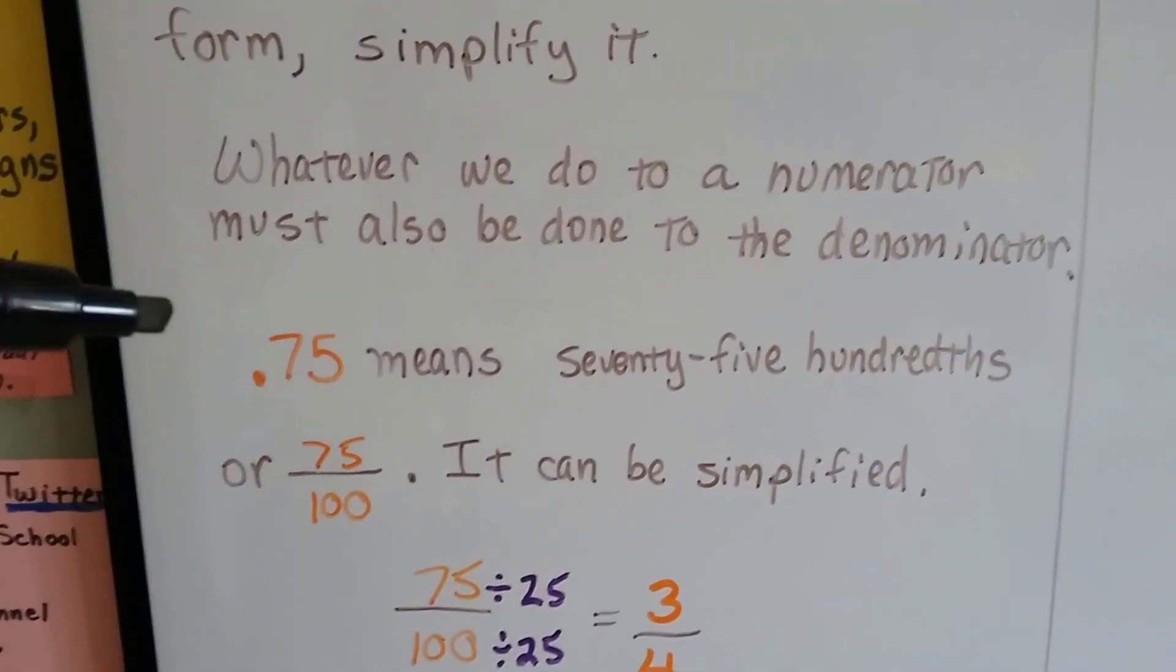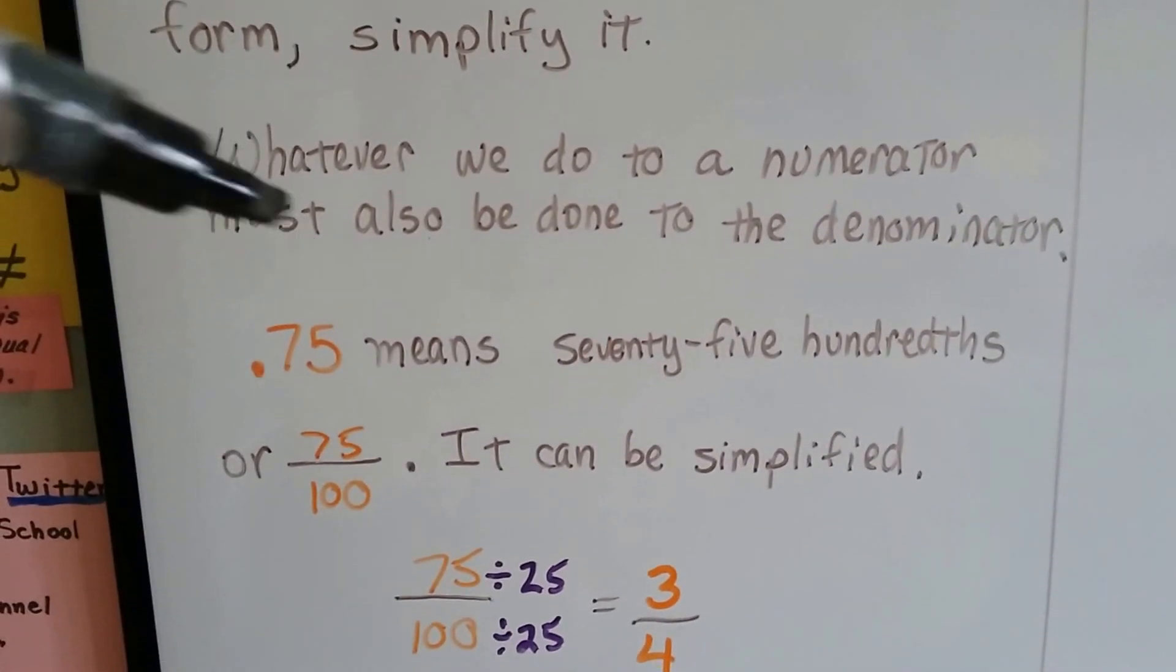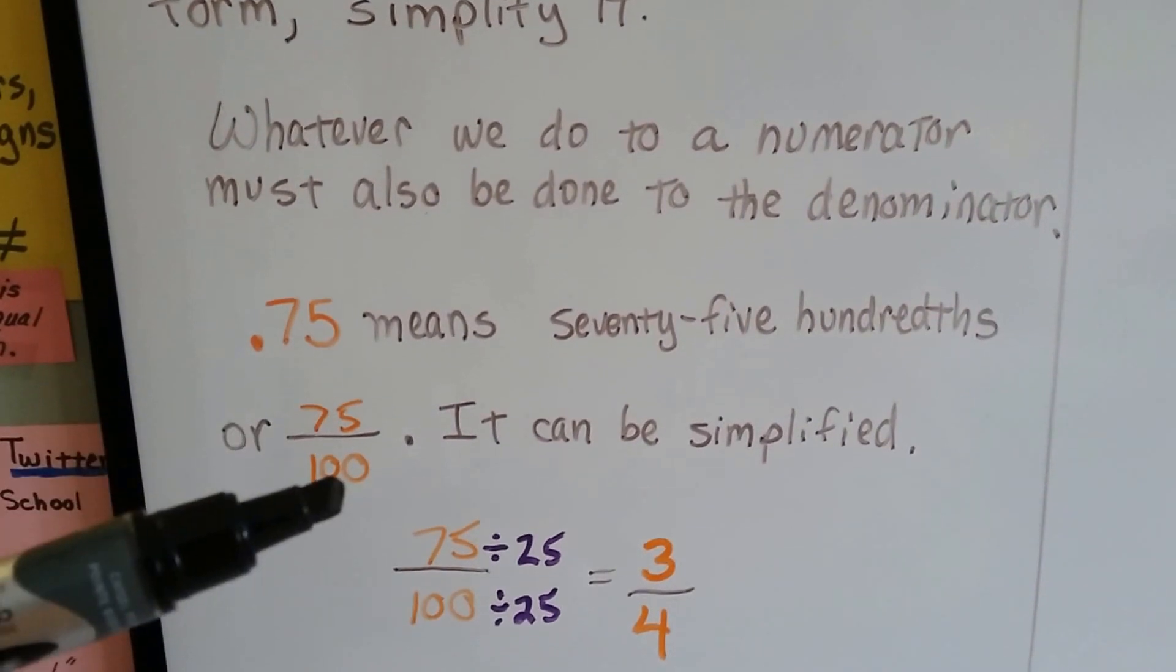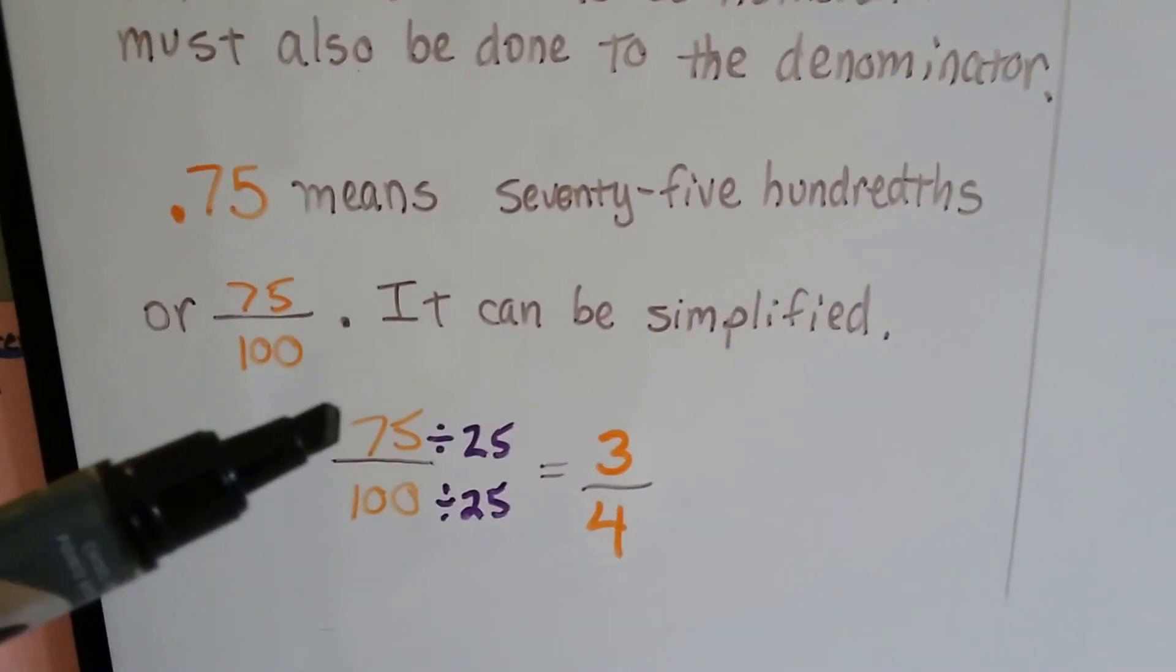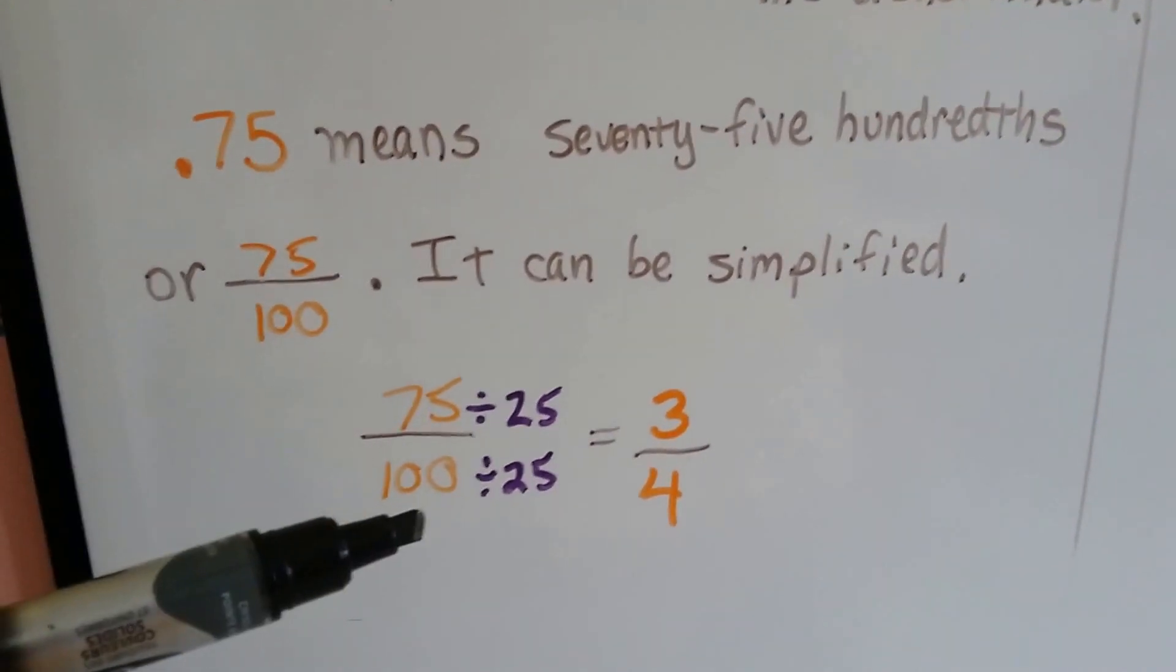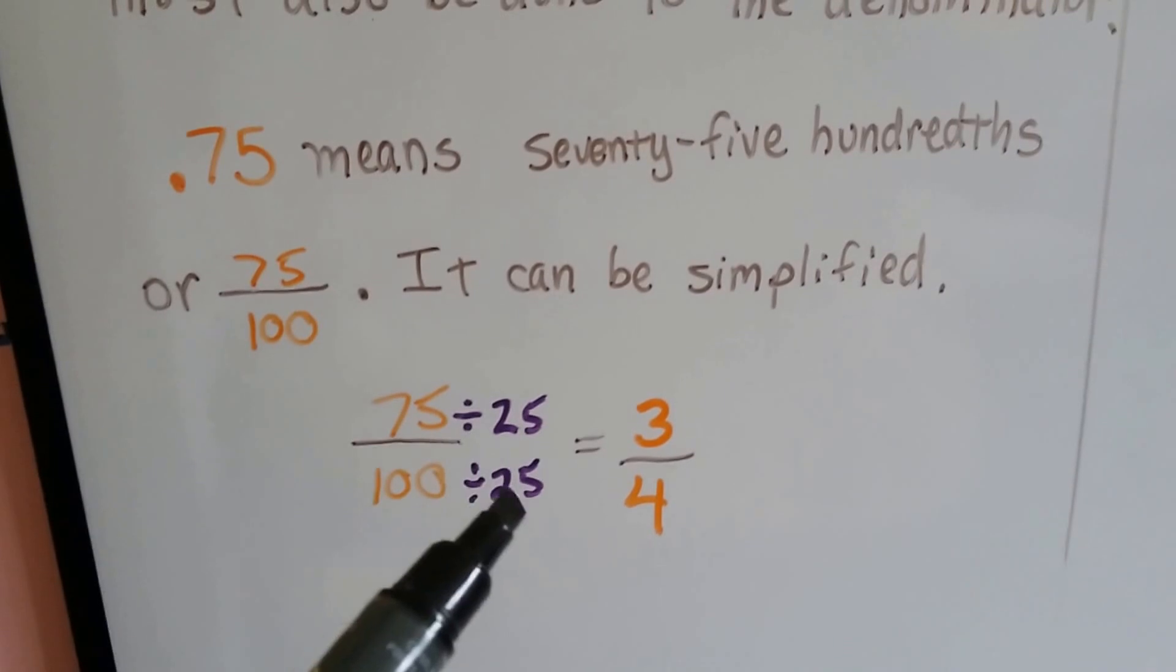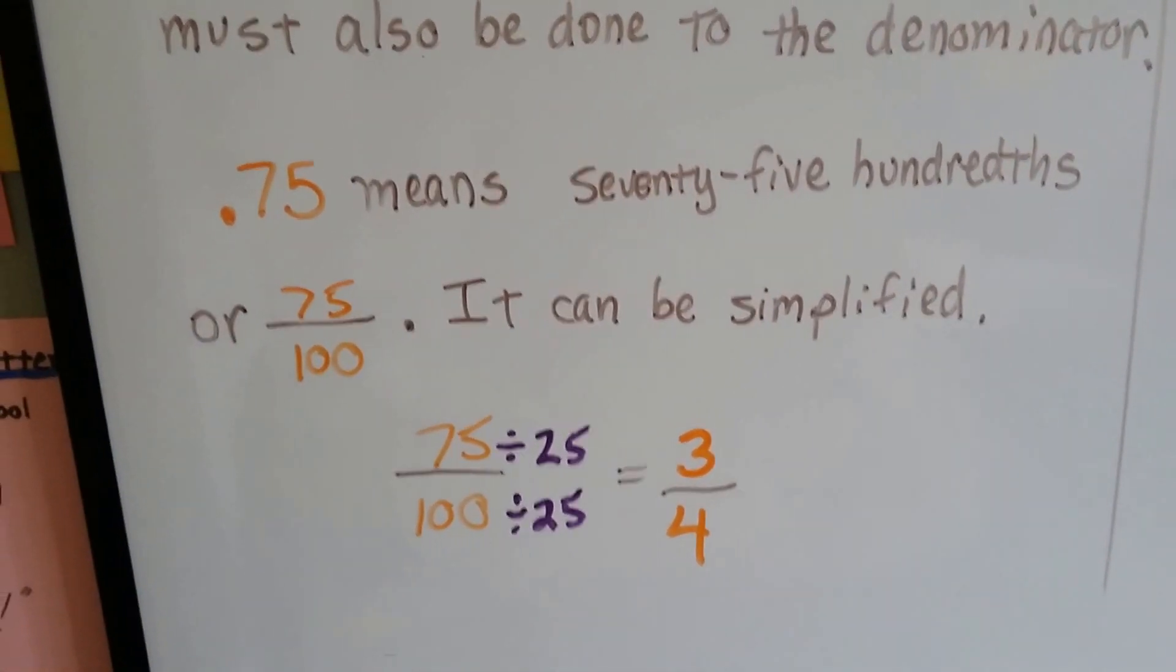So 0.75 means 75 hundredths. This is tenths, this is hundredths. So this is 75 hundredths, it's 75 over 100. And it can be simplified. We can put 25 into both the numerator and denominator. 75 divided by 25 is 3, 100 divided by 25 is 4. So 0.75 becomes three-fourths.